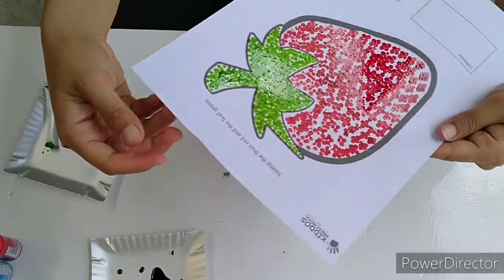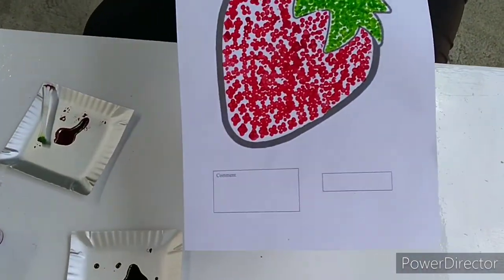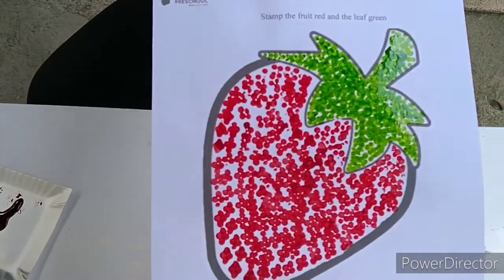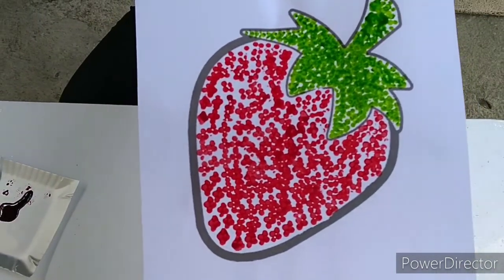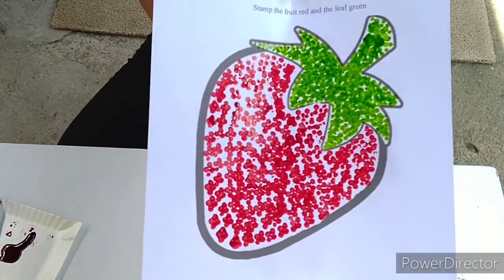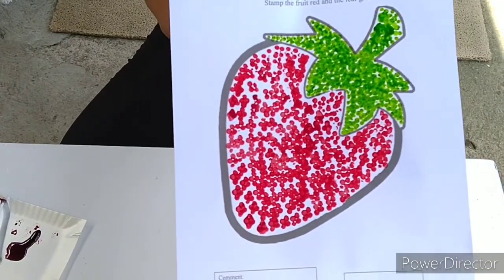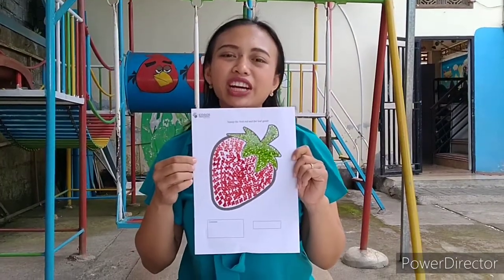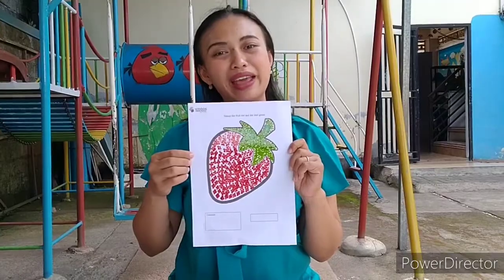Ta-da! This is our strawberry. So you can try it at home with your mama or your papa. Don't forget to mix the color to make green color. Have a nice try. Come with ukida. See you and bye bye!